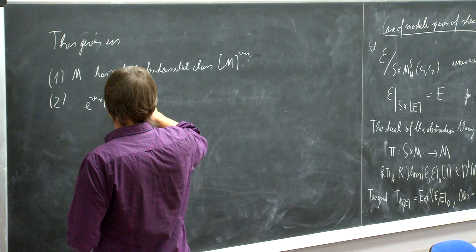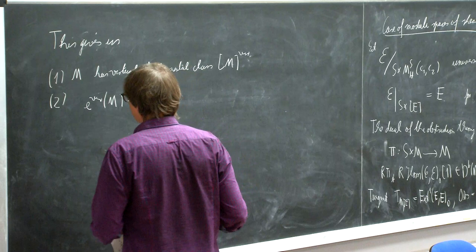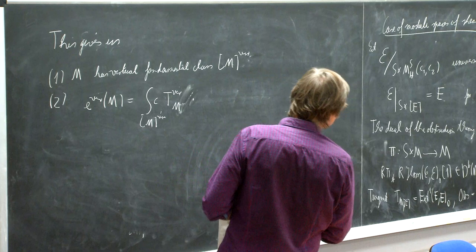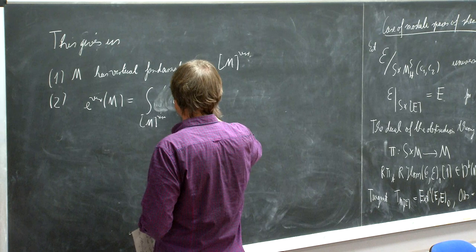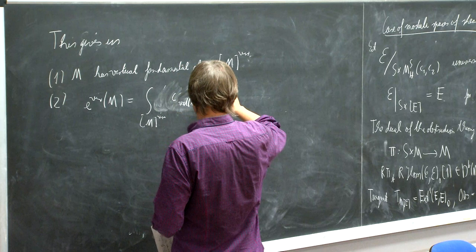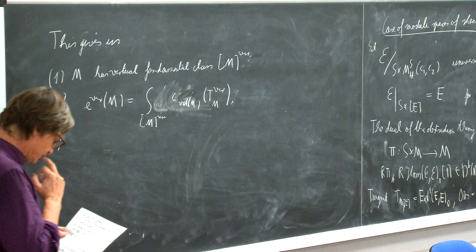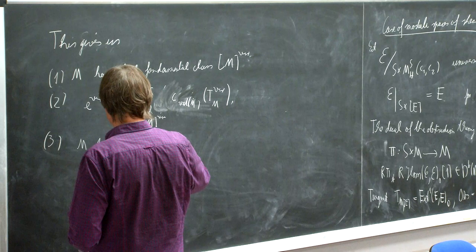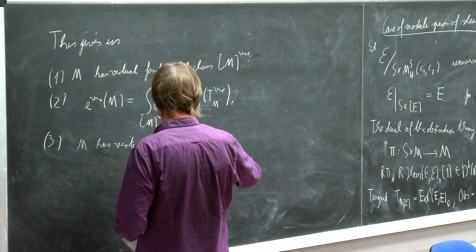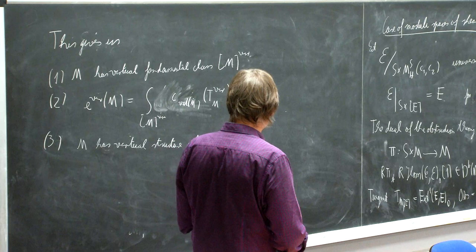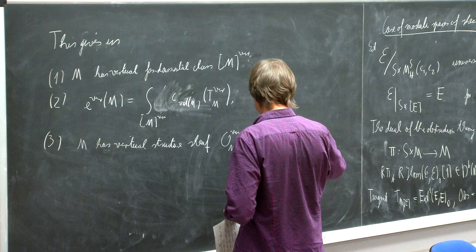The virtual Euler number is the top Chern class, let me write CVD of M, of the virtual tangent bundle. We also have a virtual structure sheaf — M has a virtual structure sheaf O^vir_M — which is an element in the Grothendieck group of coherent sheaves on the moduli space. This allows us, for any vector bundle or complex of vector bundles on M, to compute the virtual holomorphic Euler characteristic.